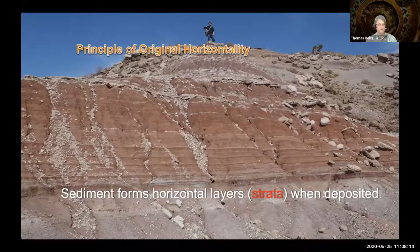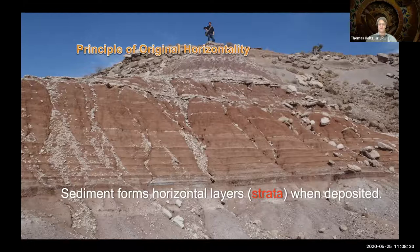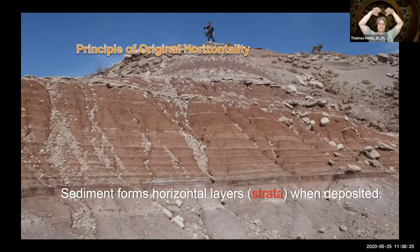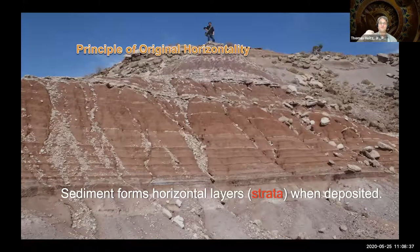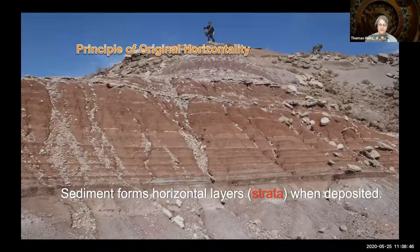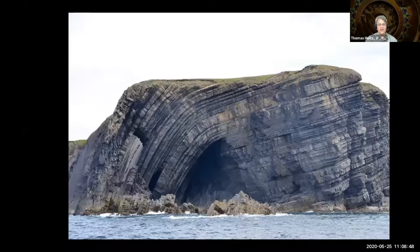One of the first principles of stratigraphy is the principle of original horizontality: the observation that sedimentary rocks formed by sediment settling out in a depositional environment form horizontal layers, or strata, when deposited. If you didn't realize that, you might not be able to do any of the next several steps of geochronology and stratigraphy. Because of original horizontality, and the fact that strata don't stay that way — lots of things can happen to bend, fold, fault, and overturn them.